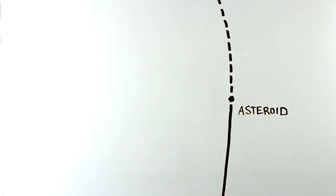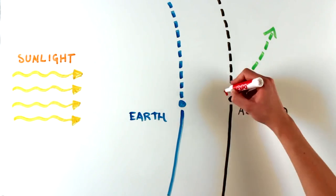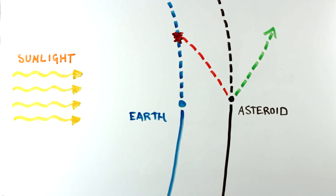These tiny forces can change the asteroid's orbit. If the asteroid speeds up, the orbit will expand. If it slows down, the orbit will shrink.